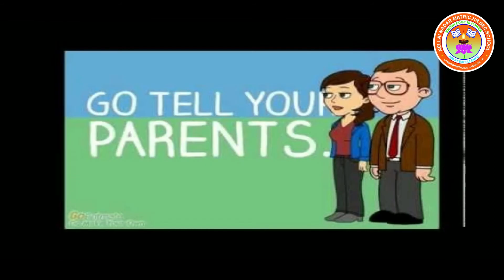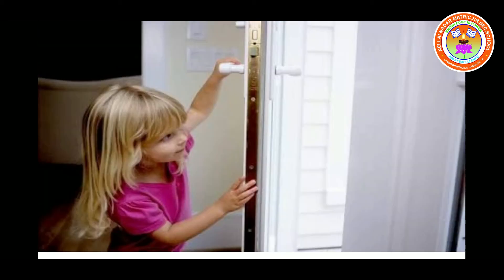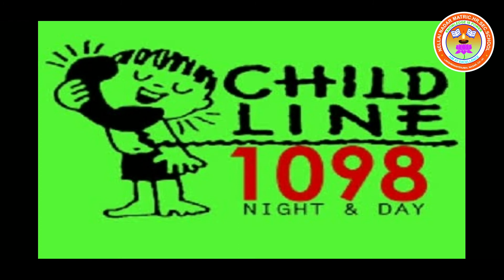Safety tips every child should know. Tell everything to your parents, especially to mother. Don't share your address and phone numbers with strangers. Don't answer the phone or open the door without an adult's presence. Never eat anything you get from strangers. Have an emergency telephone number like child line 1098.